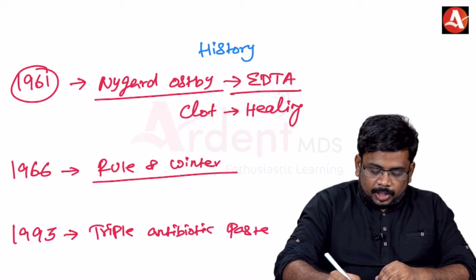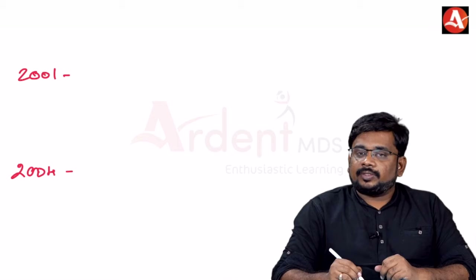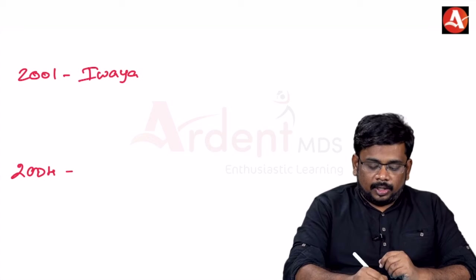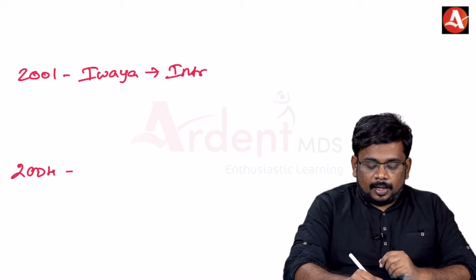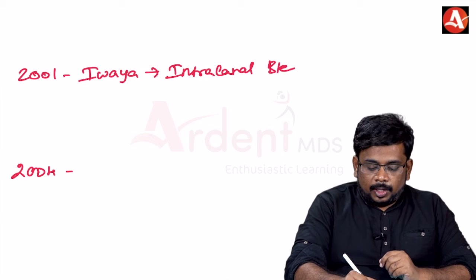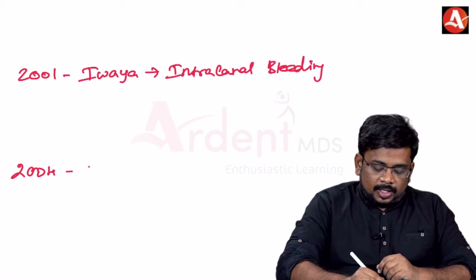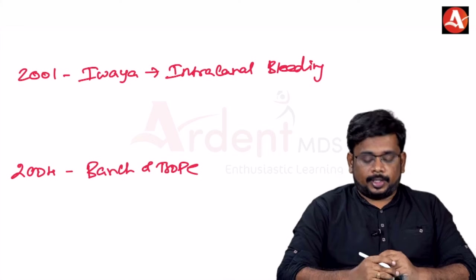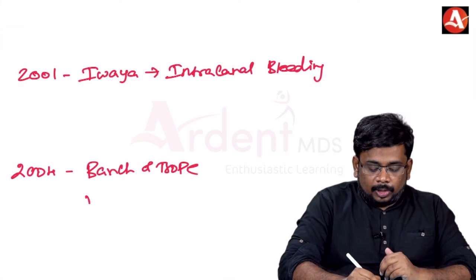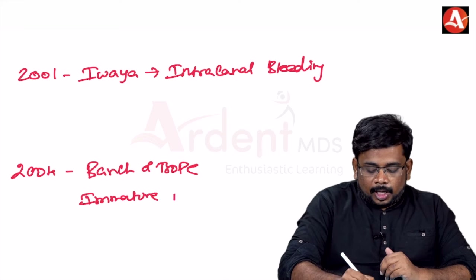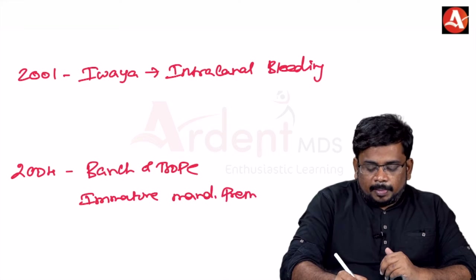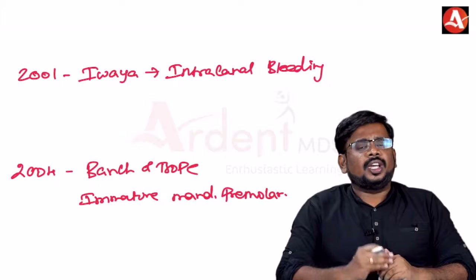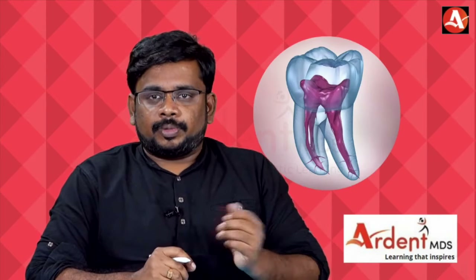In 2001, a scientist called Vaya introduced the intracanal bleeding procedure. In 2004, scientists Bansch and Troop submitted a case report for revascularization related to an immature mandibular premolar. These are some of the important personalities you need to know related to regenerative endodontics, as examiners occasionally ask about them.